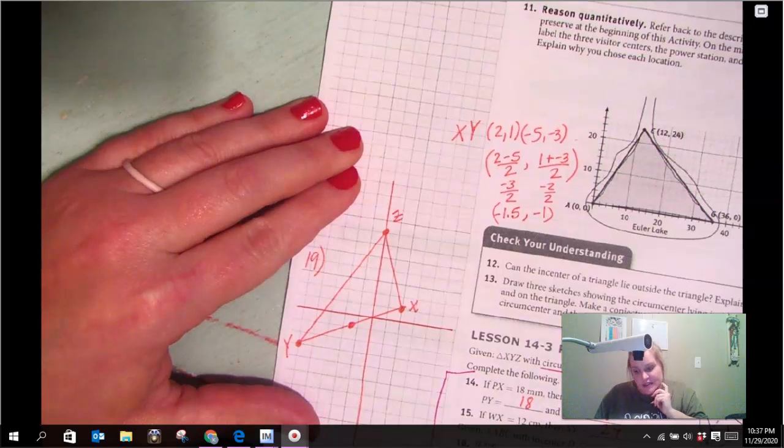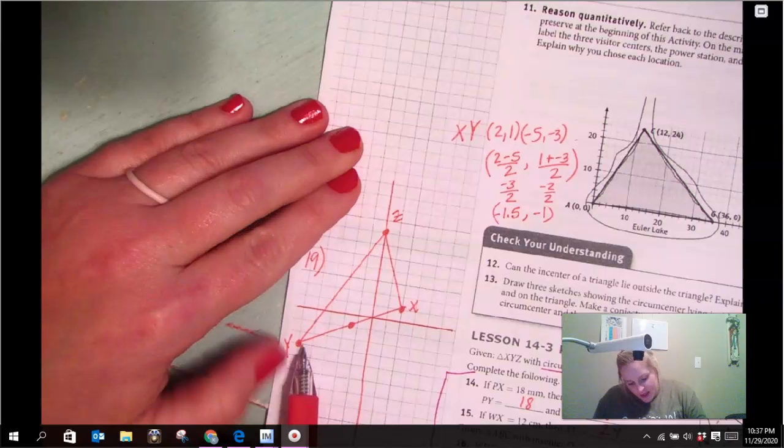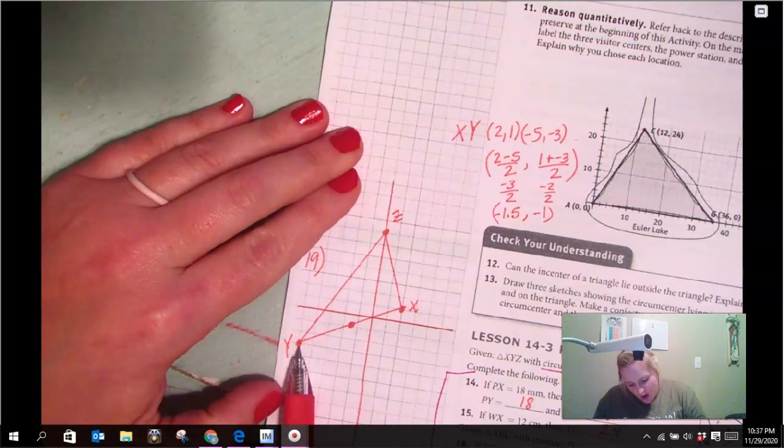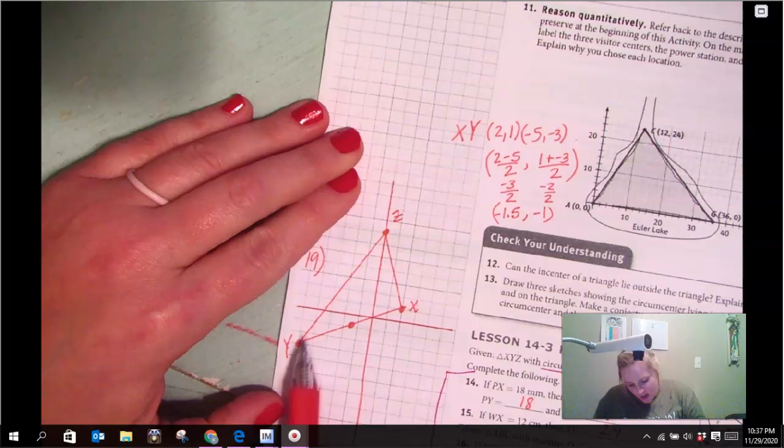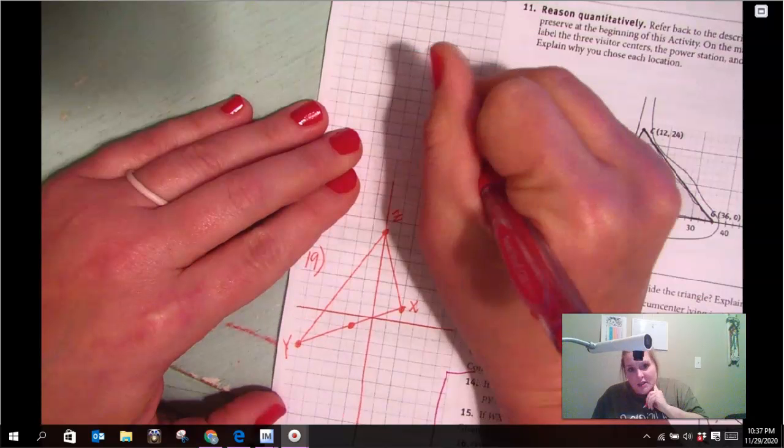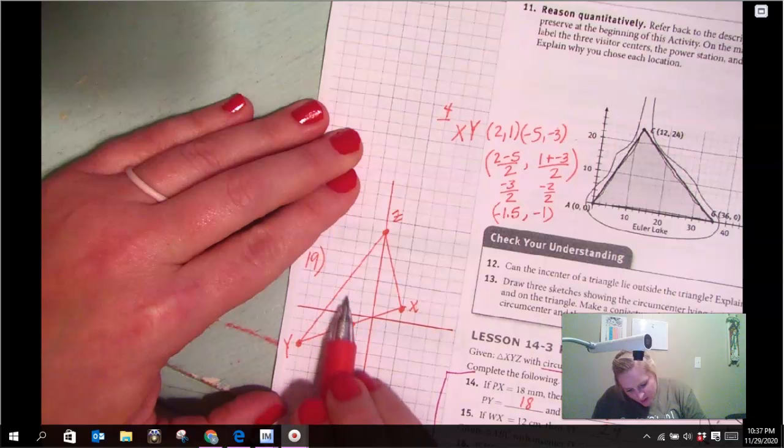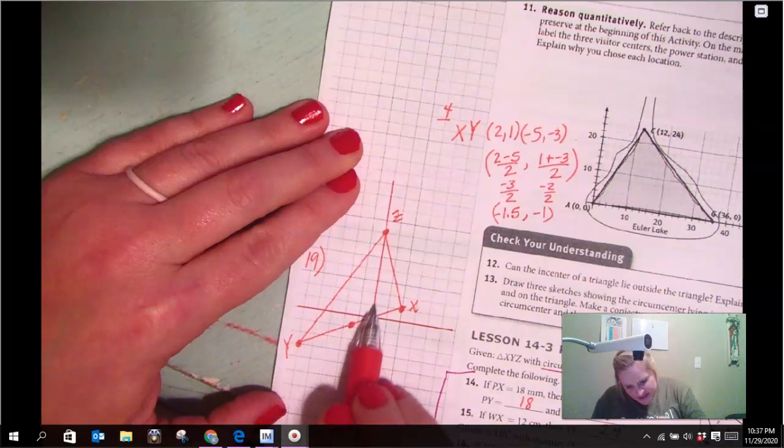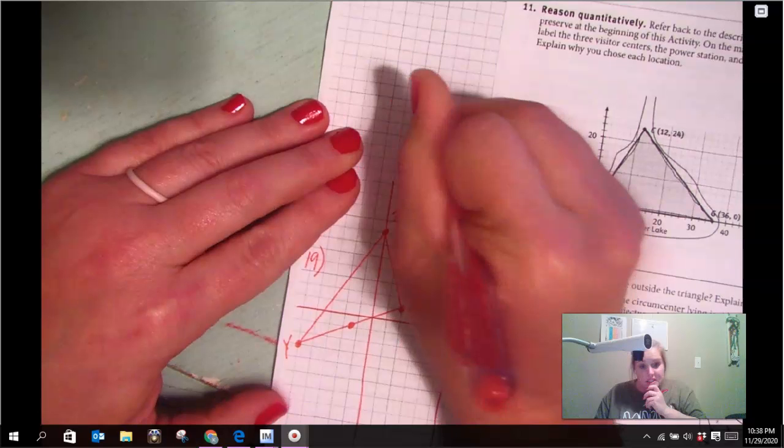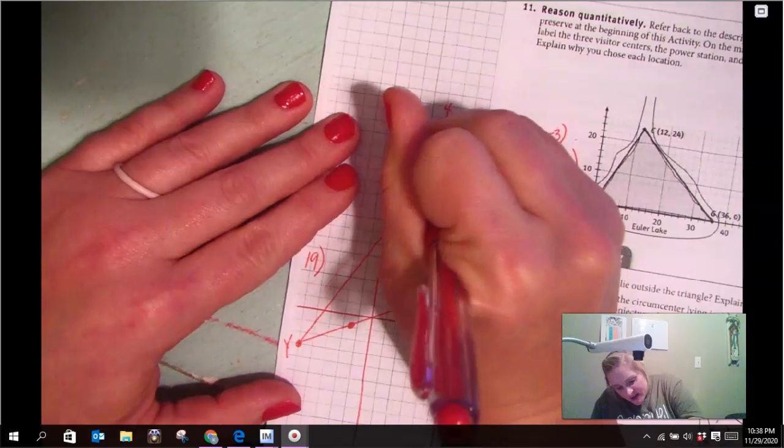Now, I also need to know the slope of XY, so I can do the perpendicular slope. So if I look at this slope here, I'm going to count all the way up until I get to X. So my rise is 4, and my run is 7. So my perpendicular slope is going to be negative 7 fourths.